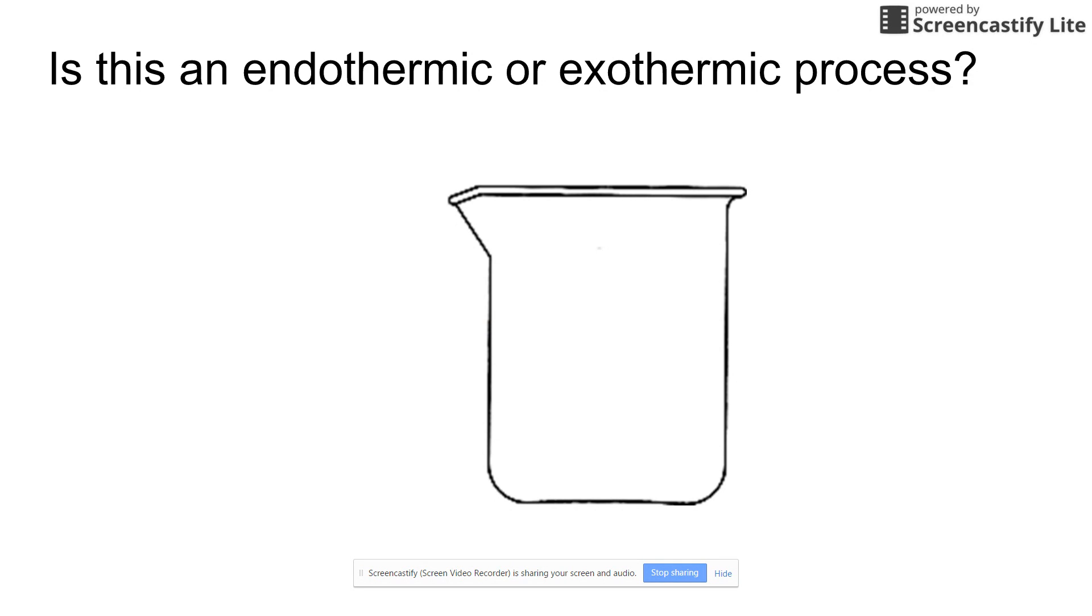And say you get another beaker, you mix two more chemicals, and all of a sudden the surroundings get very cold, the beaker gets really cold to the touch. What's going on is heat is being transferred from the surroundings to the system, and so that is by definition an endothermic process.